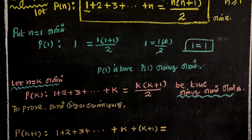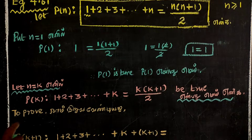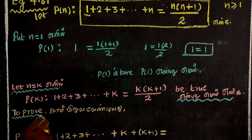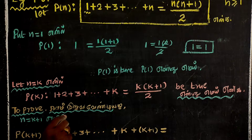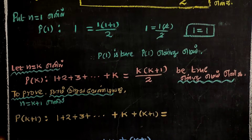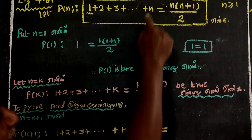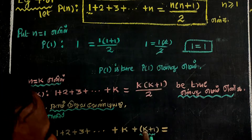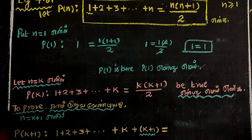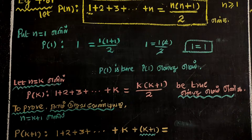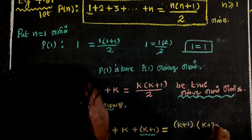If we think about k plus 1, we need to show this statement will be correct for n equal to k plus 1. That means 1 plus 2 plus 3 plus etcetera plus k plus k plus 1. What is k plus 1 plus 1? That is k plus 2, divided by 2.